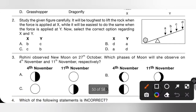Question 2: Study the given figure carefully. It will be toughest to lift the rock when force is applied at X, and easiest when force is applied at Y. It will be toughest when force is applied at A, so X is A. It will be easiest when force is applied at D, so Y is D. Option D is the correct answer.